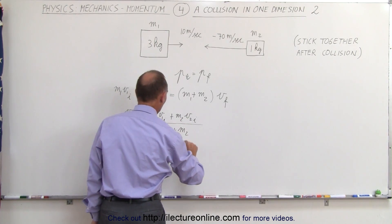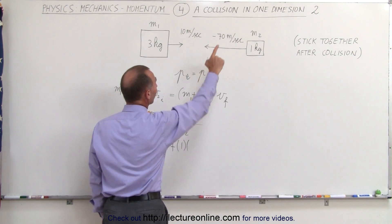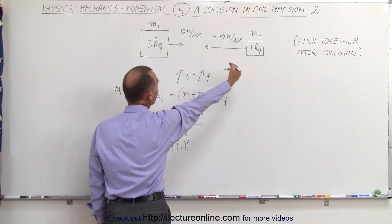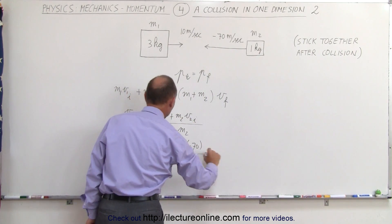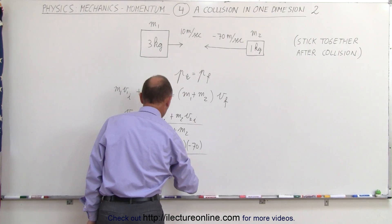plus M2 which is one kilogram. In this case, velocity initial for the second object is to the left so it would be minus 70 all divided by the sum, which would be 3 plus 1.